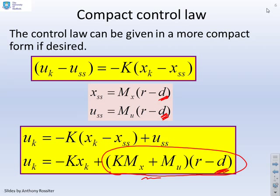The key thing is this D comes from the observer, so the D comes from the observer, and this X comes from the observer. So both the X and the D are estimates which come out of the observer.